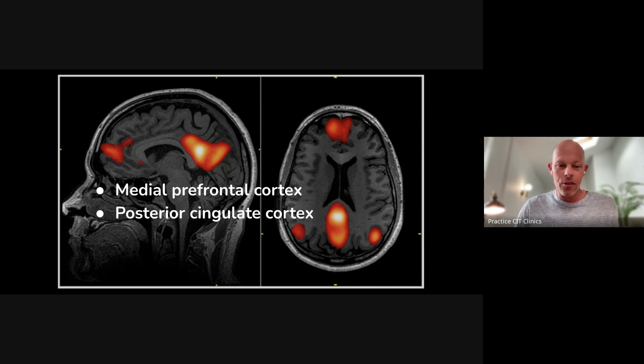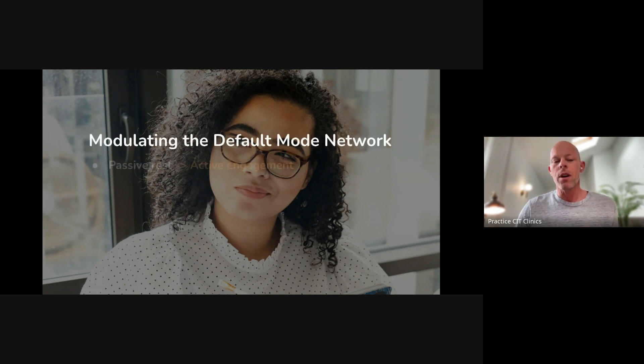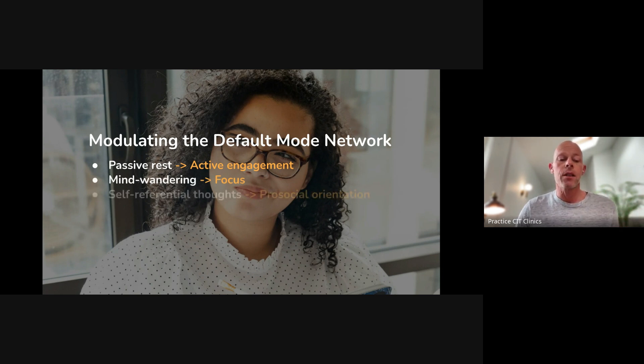Well, when it comes to attention training, what we can do is we can actually intentionally shift this. We can modulate the default mode network. And we can move from this sort of passive resting state to more of a focused active engagement. We can shift from mind wandering to actually concentrate and focus on specific tasks that we want. We shift from self-referential thinking. So me, my woes, and we actually start looking up and start noticing, taking more pro-social orientation. And then shifting from time travel to actually being present to what's happening right here, right now.